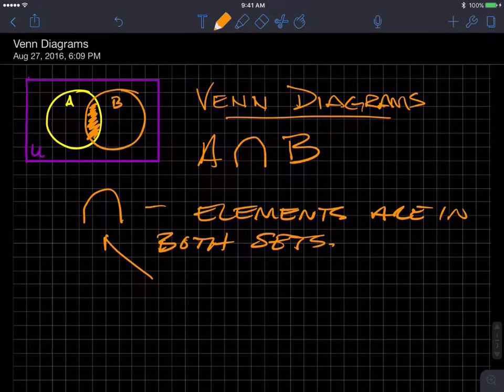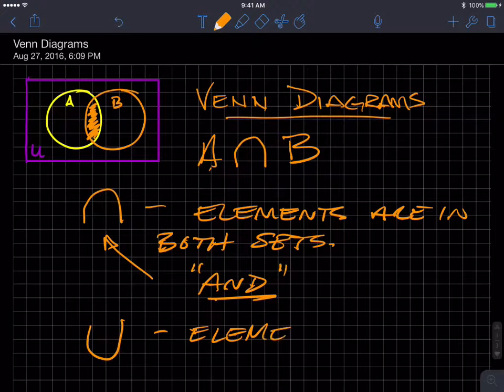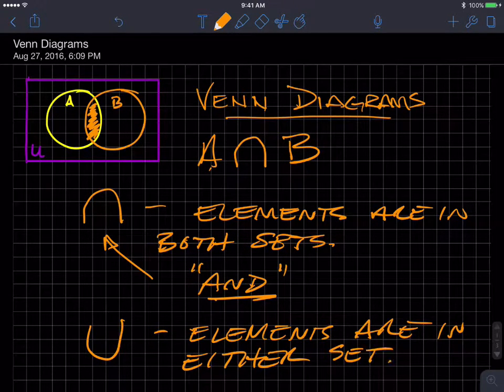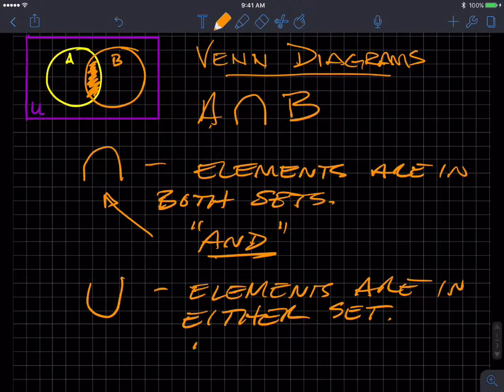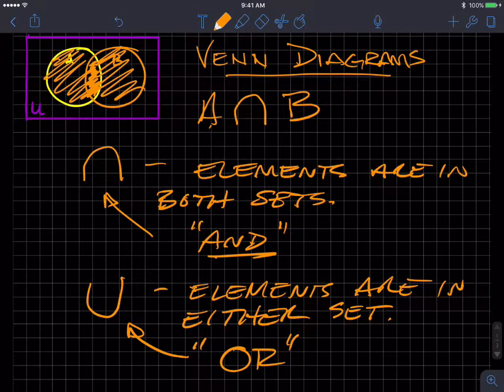And oftentimes we tie the word 'and' to the operator or relationship intersect. So it has to be in A and B. The union is the elements that are in either, or either if you prefer, either set. And the word that's usually associated with that is 'or'.